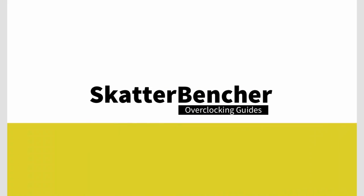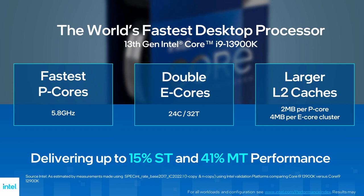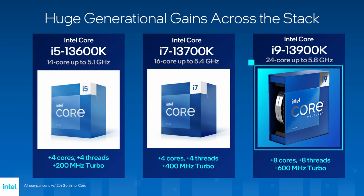The Intel Core i9-13900K is part of Intel's 13th generation core processor lineup. Intel Raptor Lake builds on top of the performance hybrid architecture introduced with the 12th generation Alder Lake. The Raptor Cove P-Cores are an evolution of the Golden Cove P-Cores in Alder Lake, with improvements mainly consisting of higher frequencies, increased L2 cache, and a new dynamic prefetch algorithm. Compared to its Core i9-12900K predecessor, the 13900K has a 600 MHz higher maximum turbo boost frequency and eight additional threads while costing $60 less.